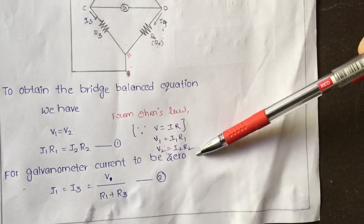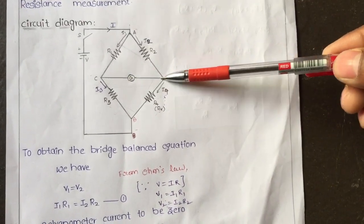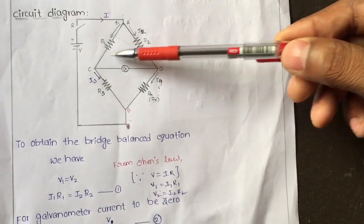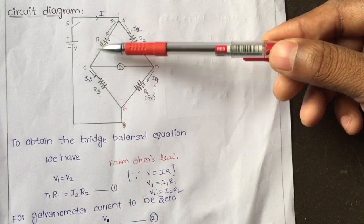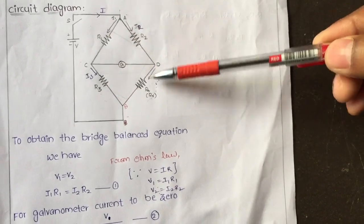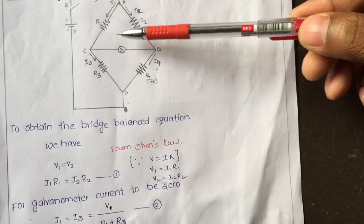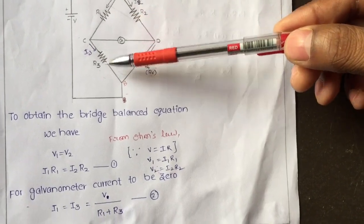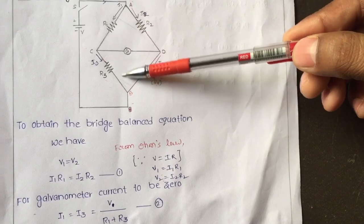For the galvanometer current to be zero, when the galvanometer current is zero then no current flows through that junction. That means R1 and R3 are in series with each other, and R2 and R4 are also in series with each other.